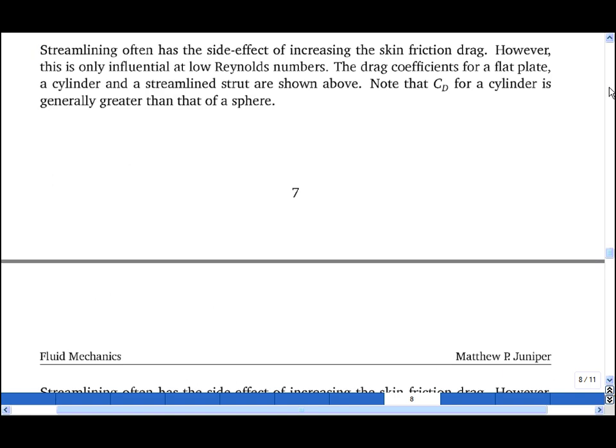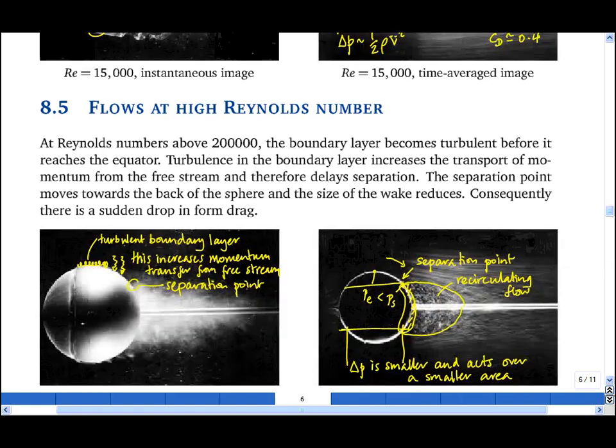If we go back a few pages, this is actually the trick being used here, where the turbulence has been triggered not just by the high Reynolds number, but by a small wire placed on the sphere, and this causes higher momentum transfer from the free stream and a delayed separation point.